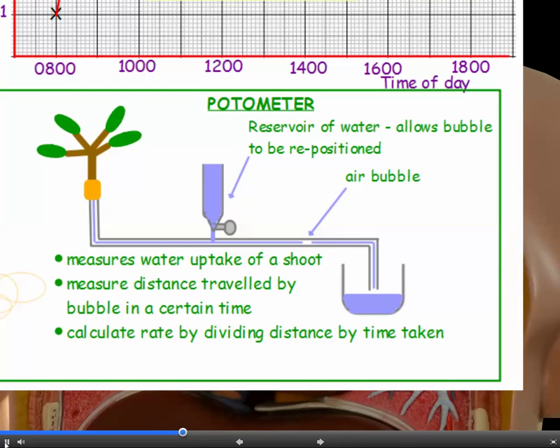Now in school, you might have done an experiment involving potometers. And these are little apparatus. It might look like this in the diagram or it might be simpler than that. But basically, it's a leafy shoot, which is attached to the end of a very thin glass tube called a capillary tube, which is full of water. And if you introduce an air bubble into the end and let transpiration take place, then you can track the movement of the air bubble as the column of water is pulled up into the shoot and is lost through the stomata. So you can use it to measure the water uptake of a shoot.